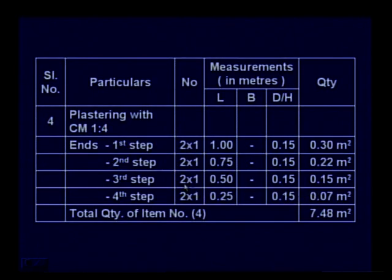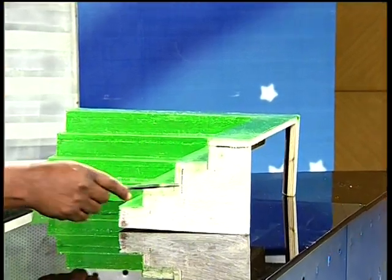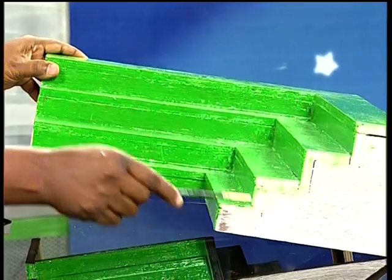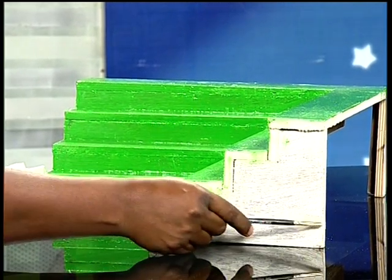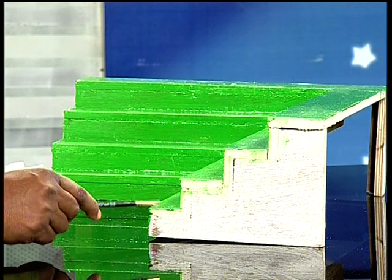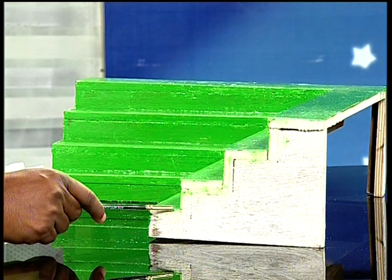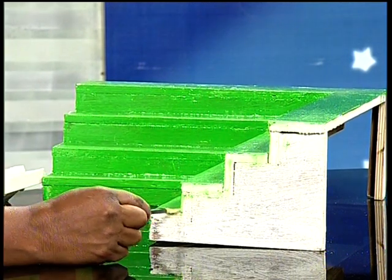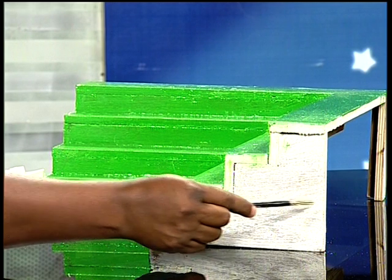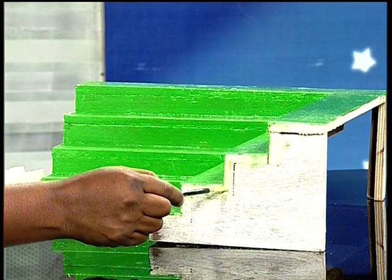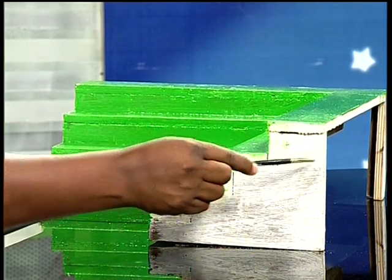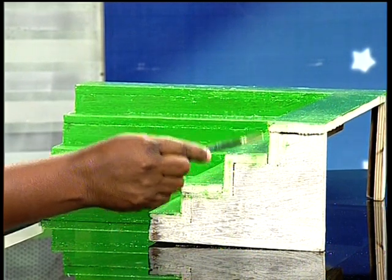Lastly, plastering with cement mortar 1:4 for the ends. For both sides — first side and the other side — for the first step the width of the stair is 1 meter and height is 0.15. For the second step, width is 0.75 and height is 0.15. For the third step, width is 0.5 and height is 0.15. For the last step, width is 0.25 and height is 0.15.